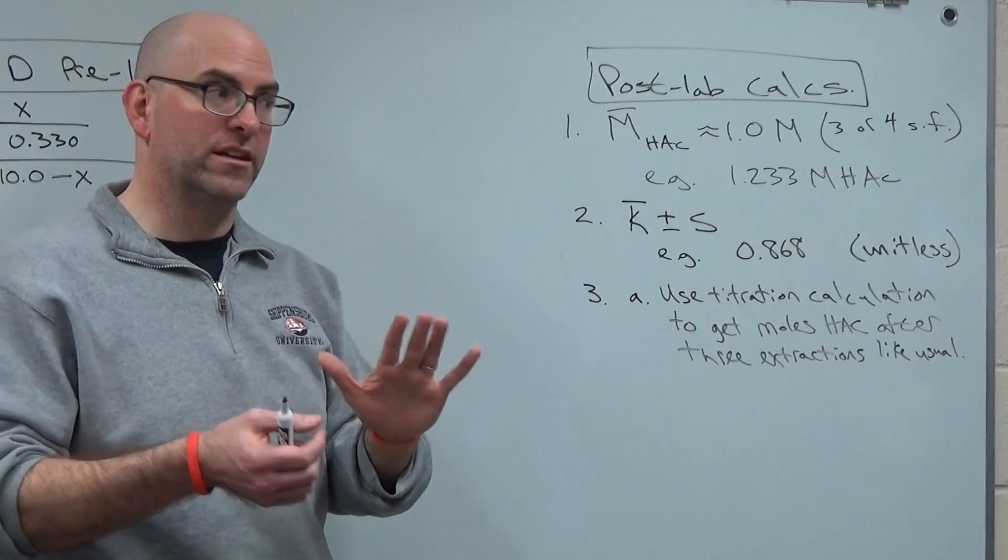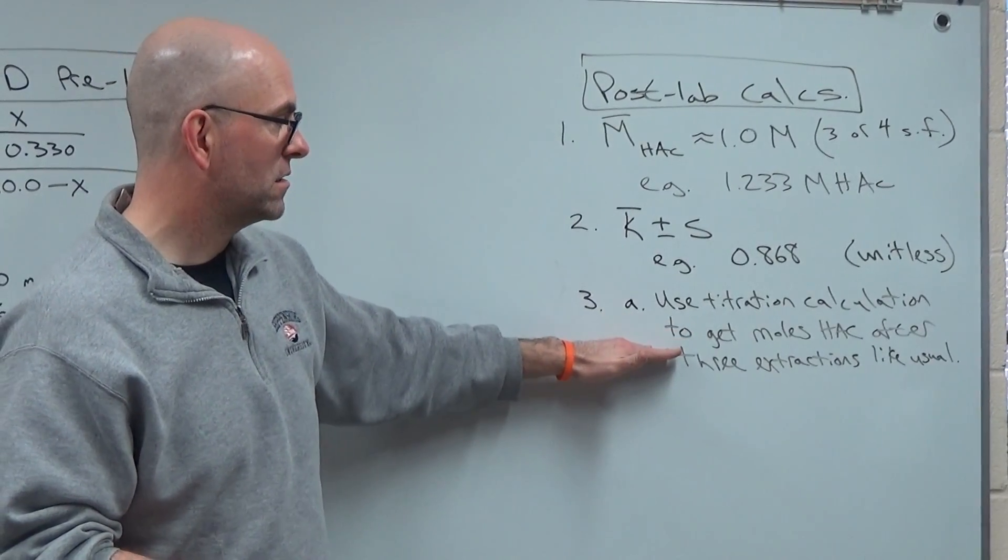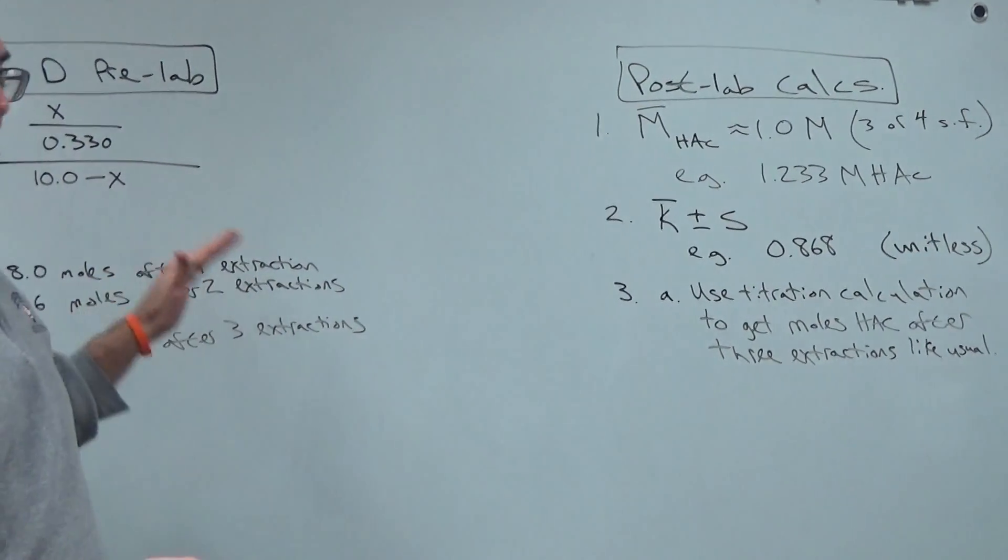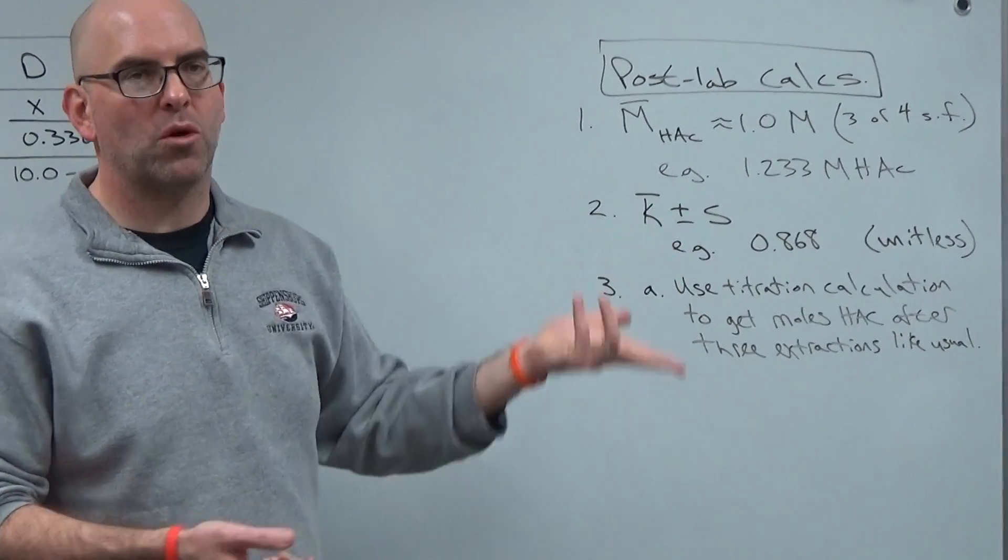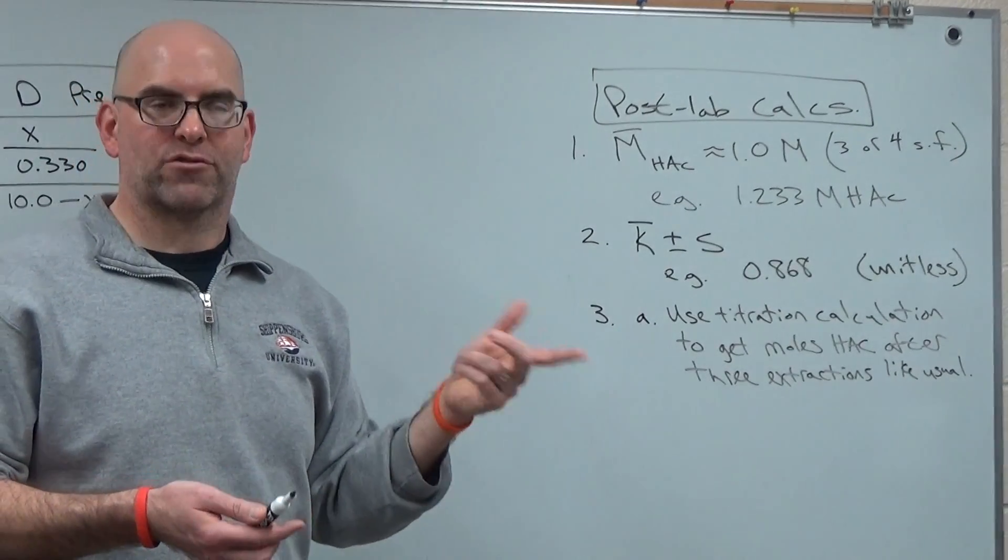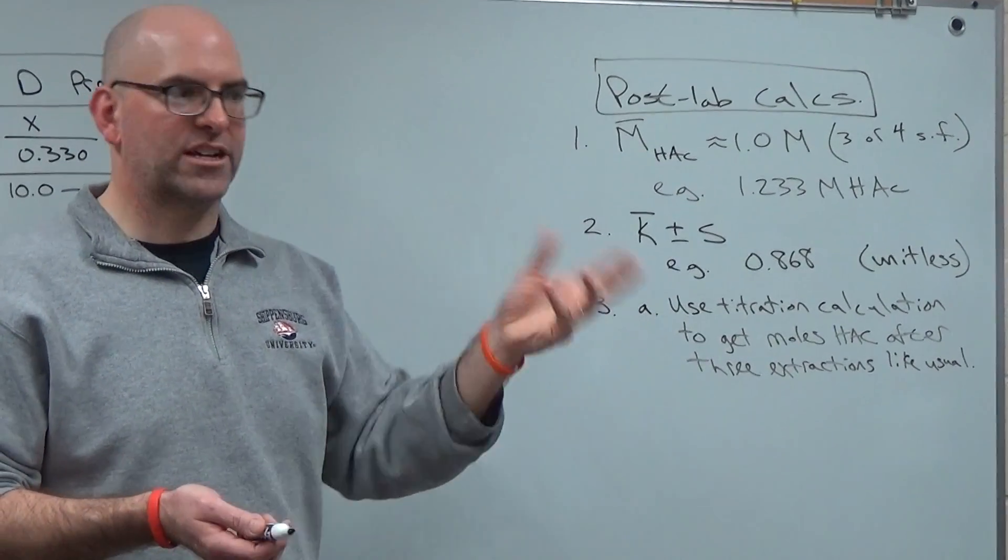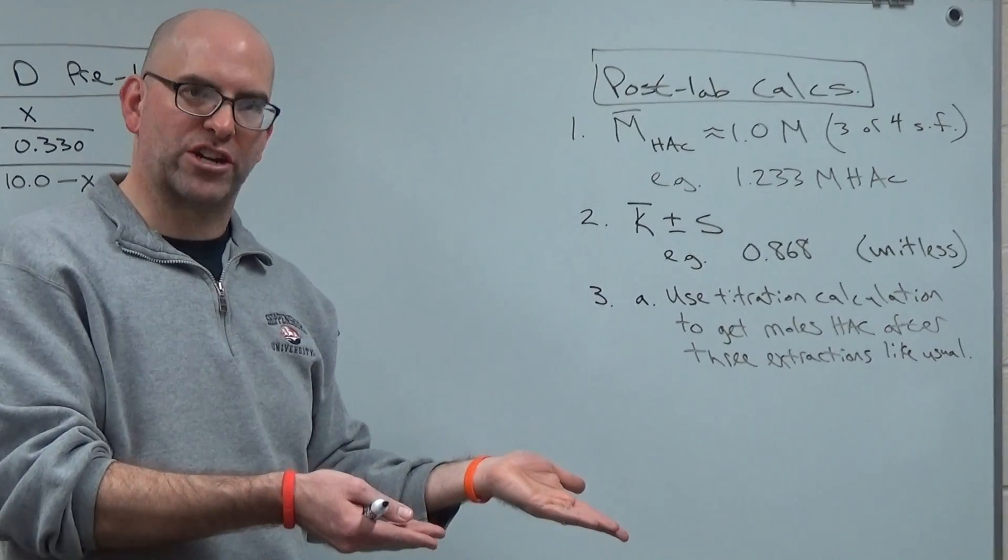What you're doing in this calculation is you're mimicking your experiment with the theoretical calculation we discussed before. So the first step is, okay, how many moles of acetic acid are left in the aqueous layer at the bottom after three extractions? I think you can handle that. So you do the extraction three times. You pull up the aqueous layer, and you just use the titration calculation. But you stop at moles.